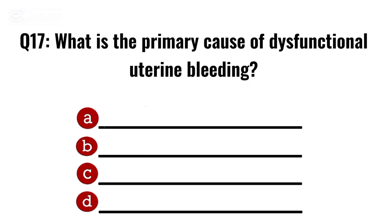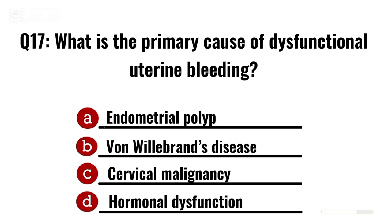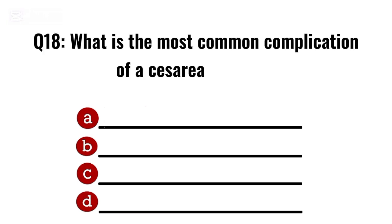Question 17. What is the primary cause of dysfunctional uterine bleeding? Correct option D: Hormonal dysfunction.